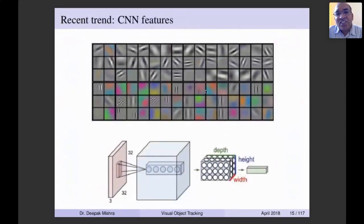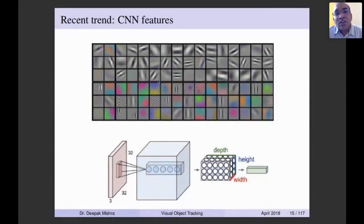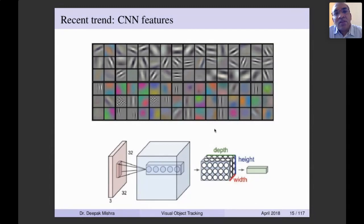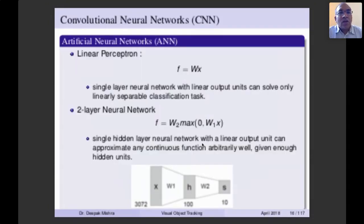Nowadays the trend is to use CNN features — convolutional neural network features. We give a single frame as input to a CNN and learn a classifier. CNN classifiers generate features in terms of kernels, and these CNN features can be used instead of color or RGB features. People now actually use CNNs for generating features for tracking.